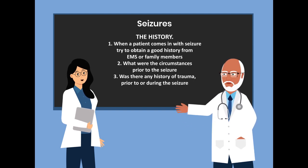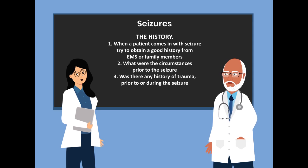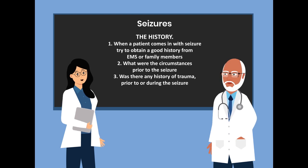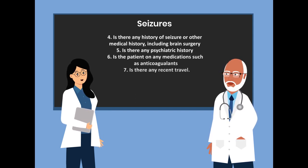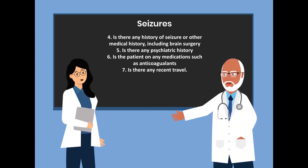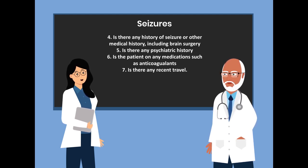Now let's go to the history. When a patient comes in with a seizure, try to obtain a good history from EMS or family members. Consider: what were the circumstances prior to the seizure? Was there any history of trauma prior to or during the seizure? Is there any history of seizure or other medical history including brain surgery? Is there any psychiatric history? Is the patient on any medications such as anticoagulants? And is there any recent travel?